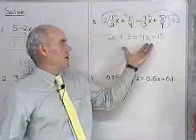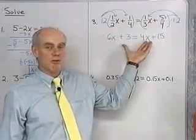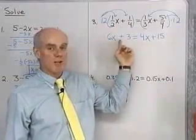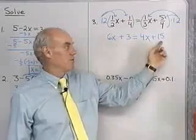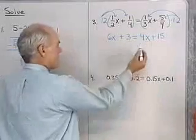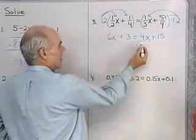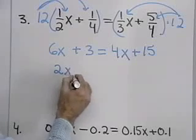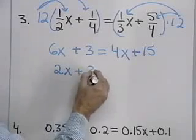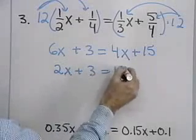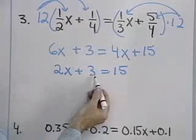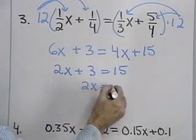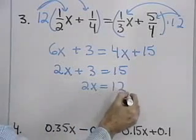Now I'm left with a nice simple linear equation in one variable. I can add negative 4x to both sides and add negative 3 to both sides. Adding negative 4x to both sides, I get 2x plus 3 is equal to 15.